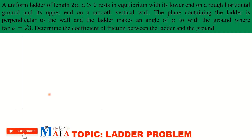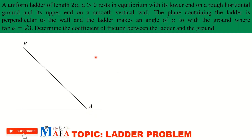We have our wall and the ground. The ladder rests on the wall and the ground, where the upper end of the ladder is on the smooth vertical wall — meaning there is no friction — and the lower end rests on a rough horizontal ground. Let's label the lower end of the ladder A and the upper end B.